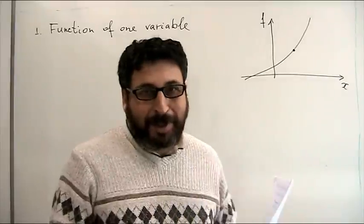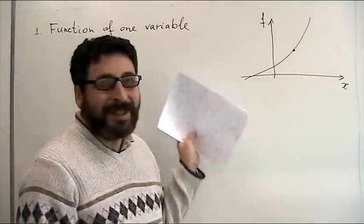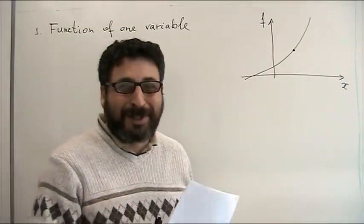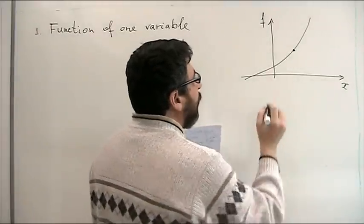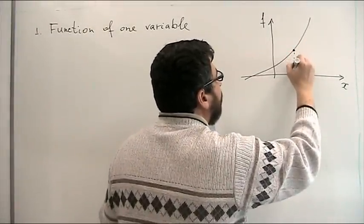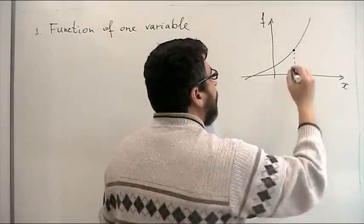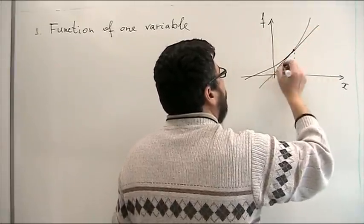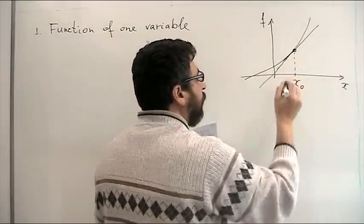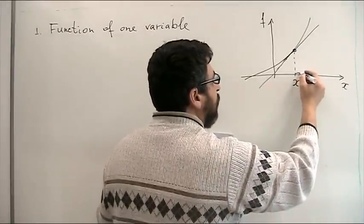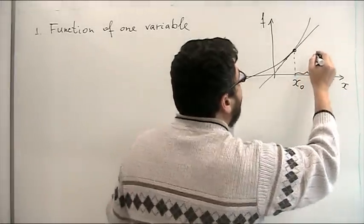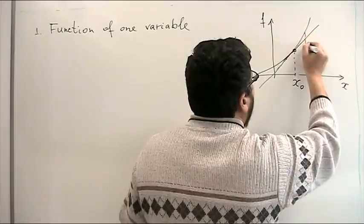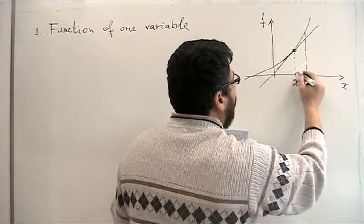First let me remind you of basic facts about the differentiation of a function of one variable. Suppose we have a function of one variable and it has its graph. How can we define its derivative? Suppose we are at some point x0 and let's build a tangent line to the graph of our function. And let's give some increment to our argument — we will call it dx.